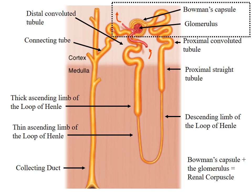The Bowman's capsule is the structure into which filtration takes place. Filtration occurs in a tuft of capillaries called the glomerulus. Blood enters the glomerulus through the afferent arteriole and leaves through the efferent arteriole. The outer covering is the Bowman's capsule, so filtrate from the glomerulus enters into the Bowman's capsule.